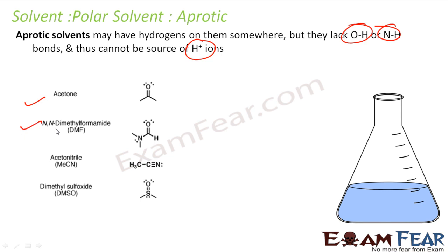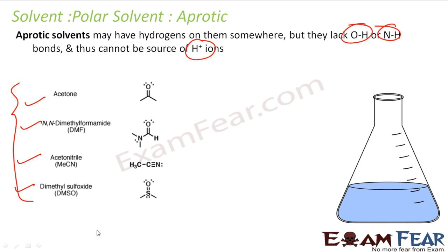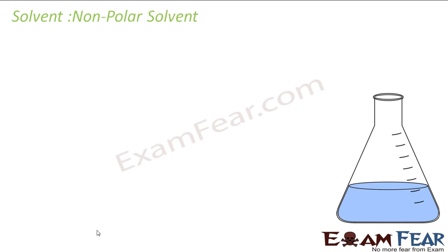Dimethylformamide, DMF, is a very common solvent used. It is also a polar aprotic solvent. Acetonitrile and dimethyl sulfoxide — these are my polar aprotic solvents. Please remember these names. We will be using these names in the reactions.